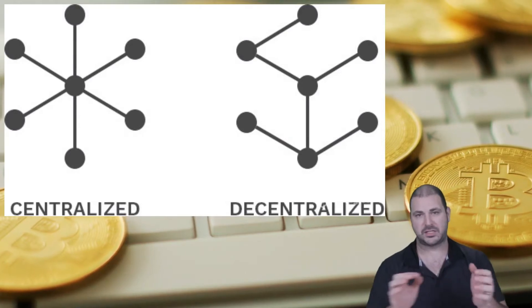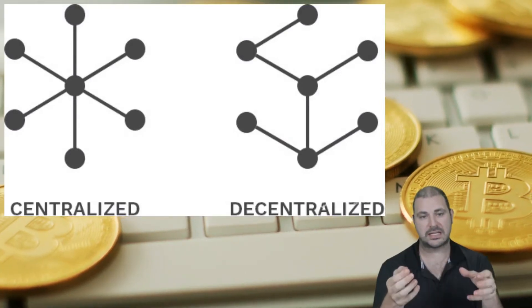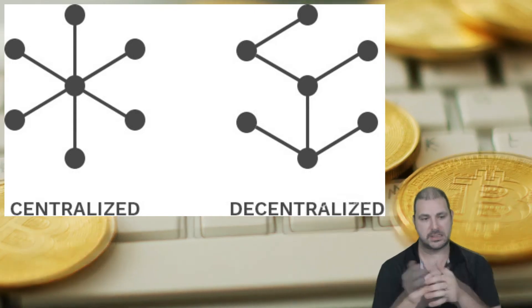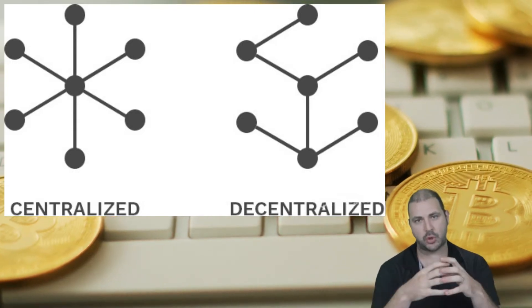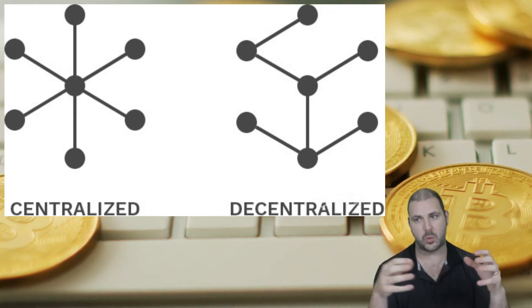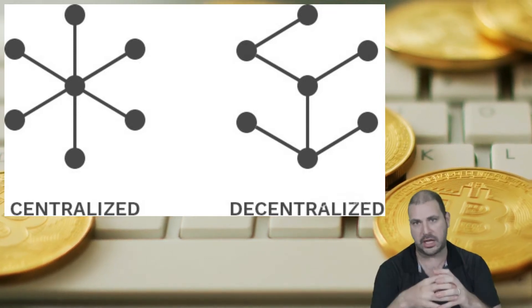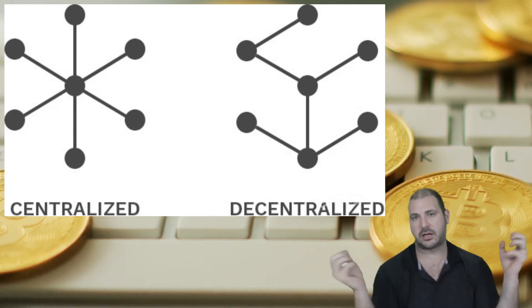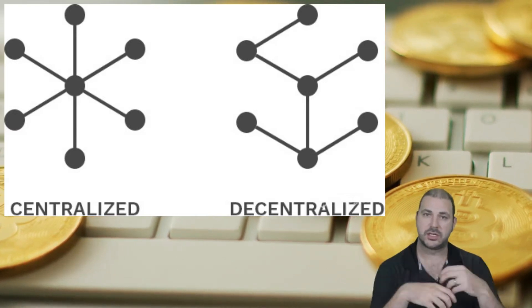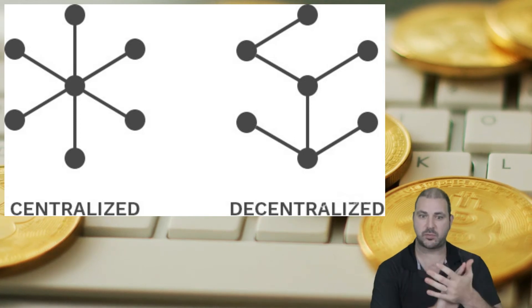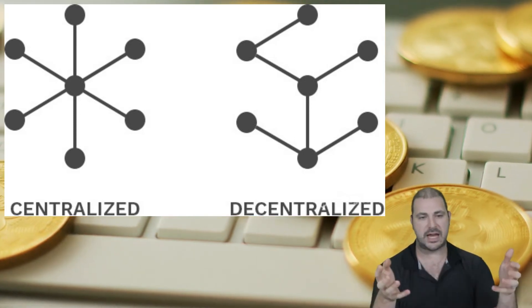Welcome everybody. It's Coach K and today we're going to talk about centralized and decentralized systems. In a centralized system, there is one person, one government, one bank, one central bank — one authority overlooking the others. They go back to that authority and put their stuff on a ledger saying yes, this is what actually happened that day. That type of system is what we currently have.